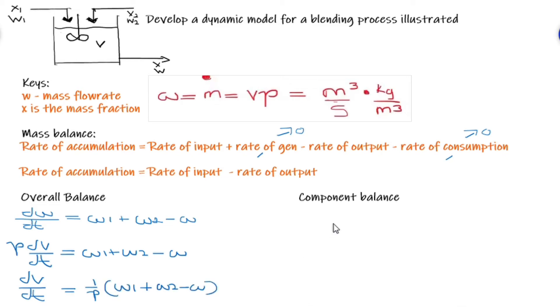Secondly, you can represent the component balance. In this case same as overall but now we are including the components which are our X's, the mass fractions. So I'm going to include them which will give us rate accumulated, dWX over dt equals to W1X1, which is the flow rate stream 1 and its mass fraction, plus W2X2 equated to WX which are the finals in the stream.